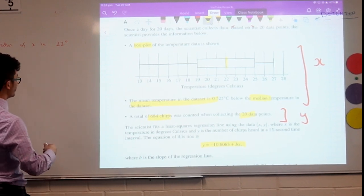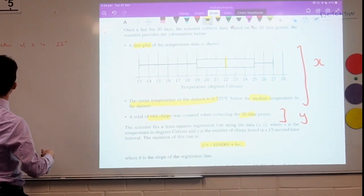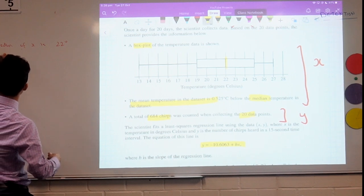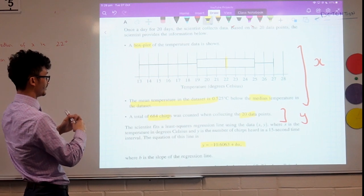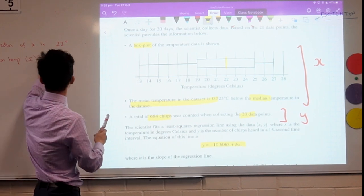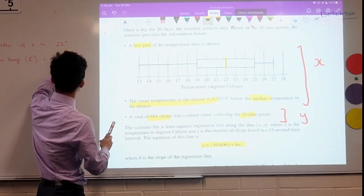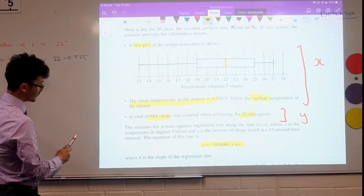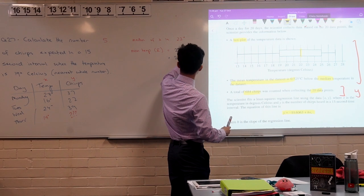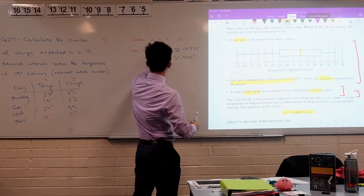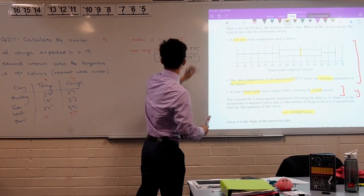So that means the mean temperature, the mean temperature, or I can write that as x bar is going to be equal to 22 take away 0.525. And that's going to give me 21.475 degrees. Okay, so far so good. I've got this x bar value that I can use over here. So I'm going to hold that over there. Okay, that's all these things done. So I don't have to worry about those anymore.